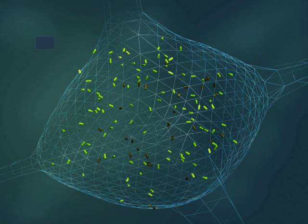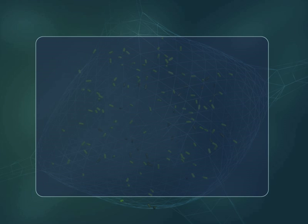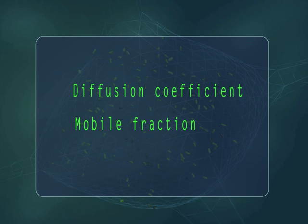By analyzing the time course of the redistribution, we can determine the diffusion coefficient and mobile fraction of the molecules.